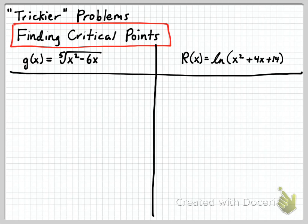g of x. Let's go ahead and rewrite g of x, by the way. I don't like g of x written like that. We've got x squared minus 6x. I'm going to write that to the 1 fifth power. So then I can just use the power rule, power rule slash chain rule.